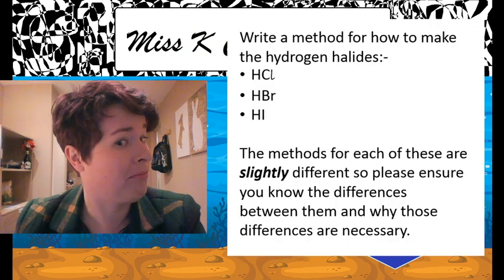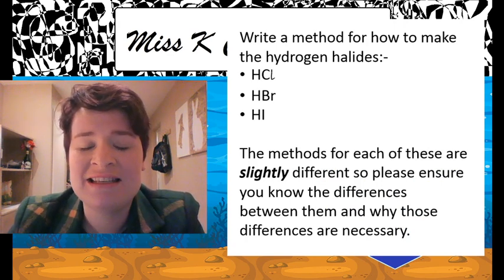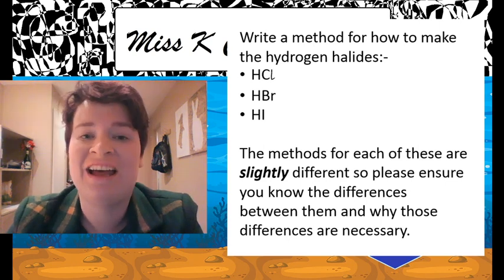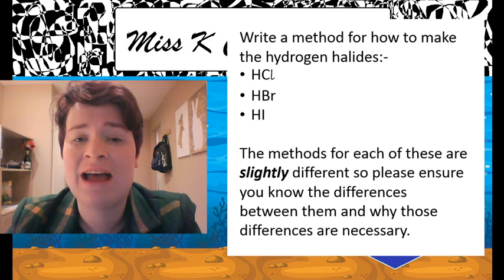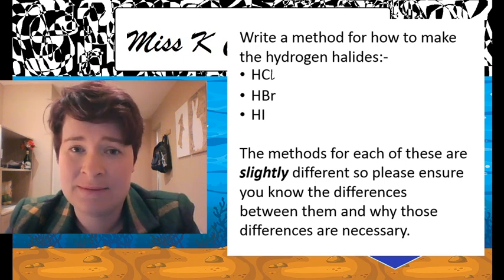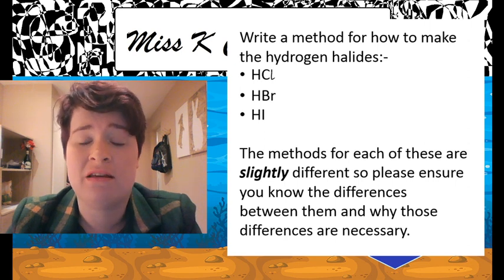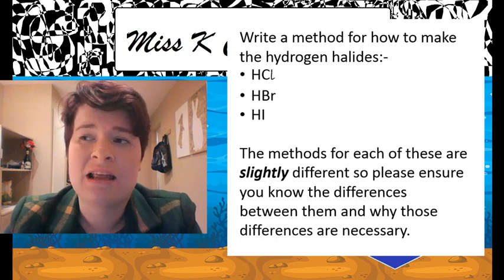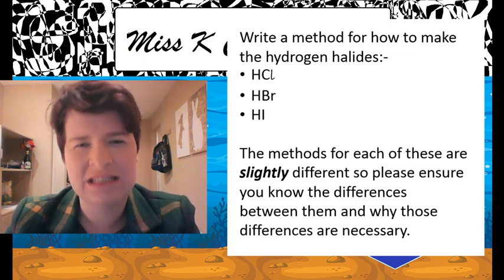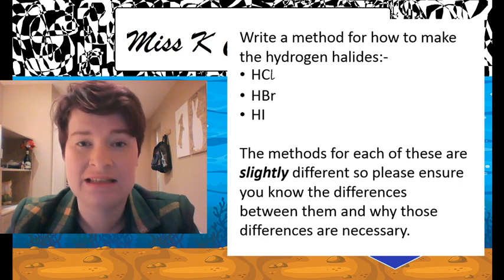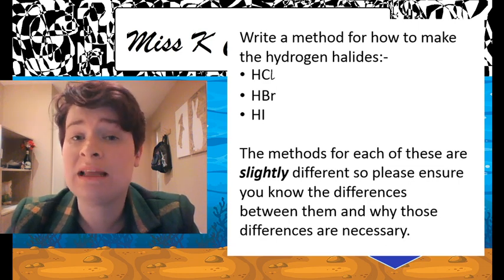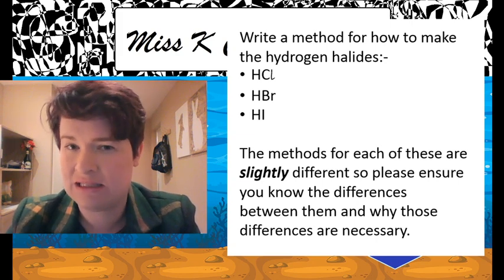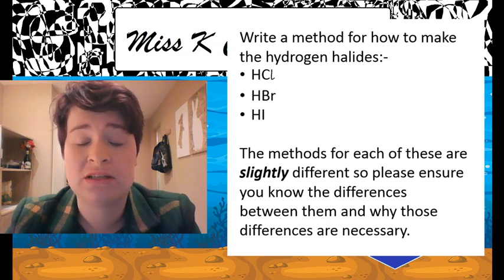There's your task. You need a method of how to produce hydrogen halides. You don't necessarily need to write a full method for each one, but what I do need you to have — as it explains there at the bottom — is that the method for making each one is slightly different. What I need you to get is the differences between them and why they are important. One of them in particular uses a slightly different acid for a slightly different reason. That is a key point and you do need to cover that well.